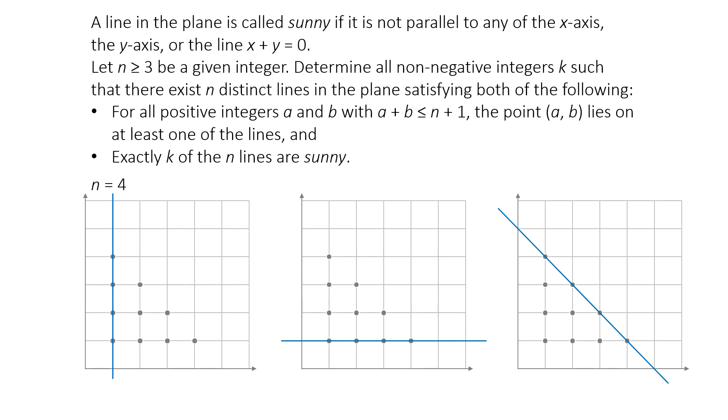Each line covers four points. If we're trying to draw all four lines to be sunny, we need to somehow avoid using all these lines. Suppose we decide not to use the line x equals 1, meaning we're not using the vertical line that covers the first column. Let's say we draw a sunny line that passes through just one of those points, like (1, 4). That leaves three more points in that column that still need to be covered, and we've already used up one line. So we now have only three sunny lines left to cover three remaining points in the first column, as well as the other remaining points.